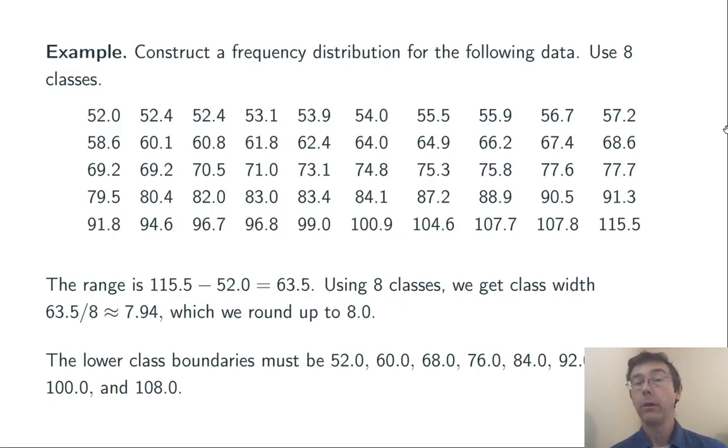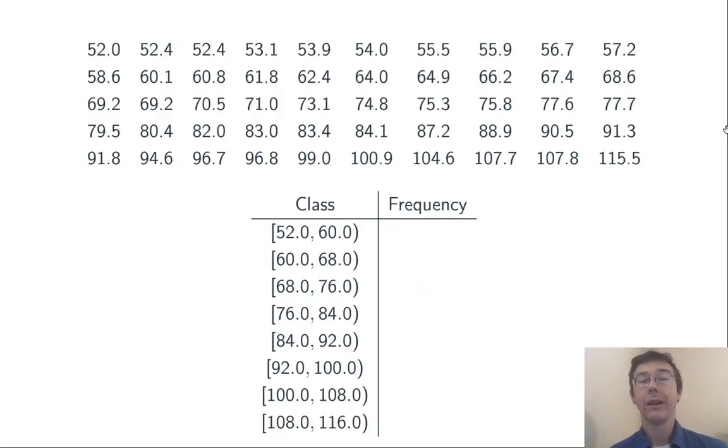52.0, 60.0, 68.0, and so on. The classes are all going to end just below the next boundary up. So, the classes look like from 52 to 60, 60 to 68, 68 to 76, and so on.